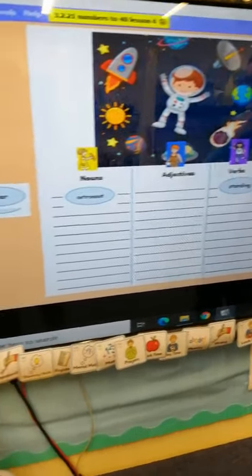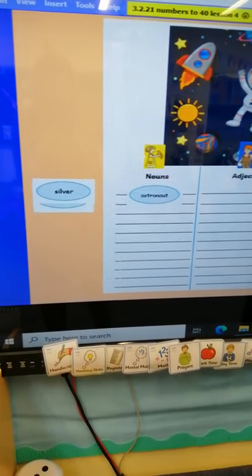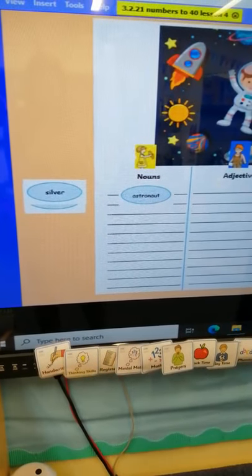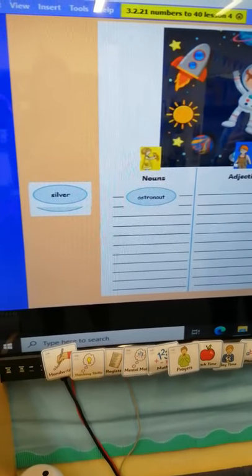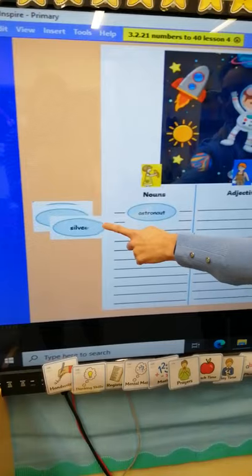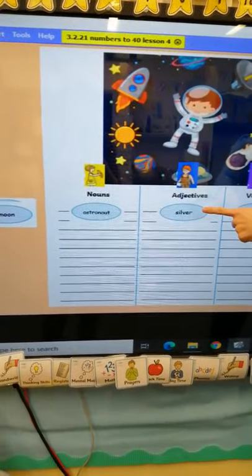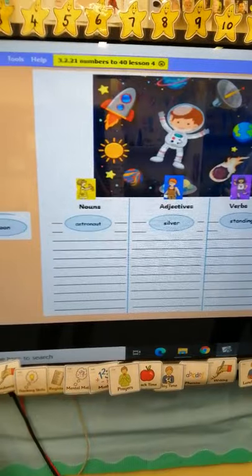Let's look at the next word that I've got here. Silver. Is that a thing? Can you take a picture of it? It's definitely not a doing word, is it? No, you're right. It's an adjective. It describes a space rocket. The silver space rocket describes a noun. Well done.